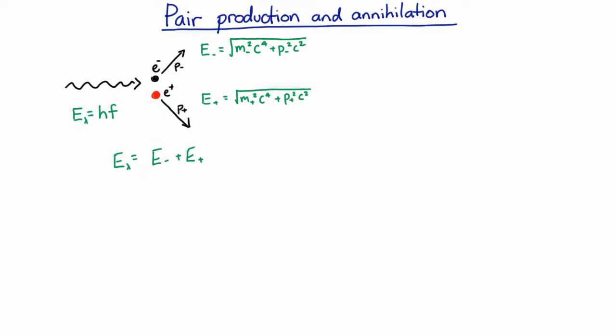And all of this process can work backwards. So you can take a pair of particles and they can come together to make a photon. And that's called pair annihilation.